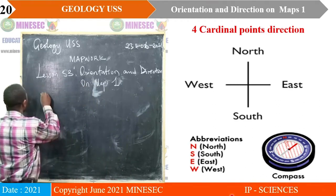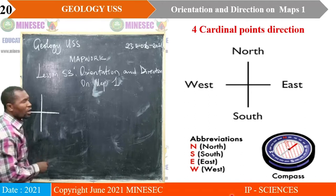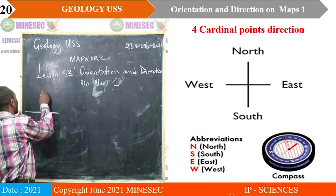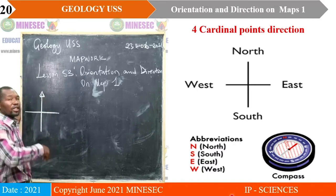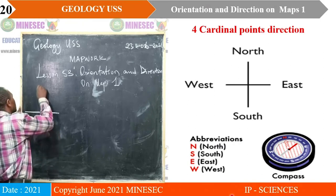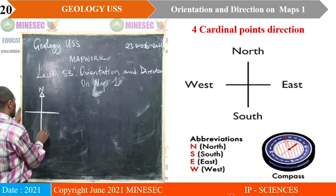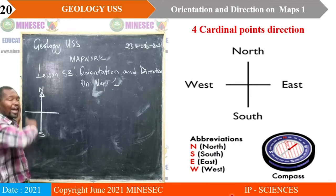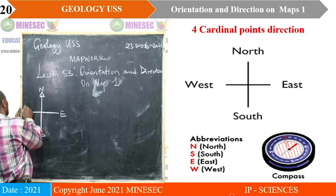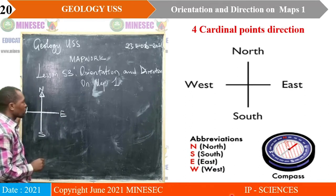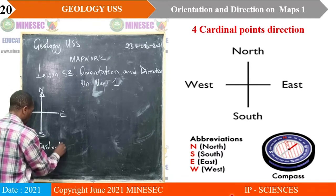We are going to represent them diagrammatically. The true north is always indicated with an arrow — don't miss it out. North is represented with capital N. Opposite the north we have the south, to the right of the north we have the east, and opposite the east we have the west. That is the four cardinal points.